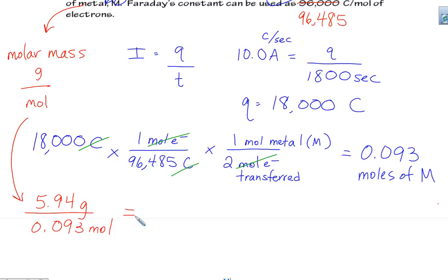So if I plug that in my calculator, I don't know, if I go two sig figs, I guess I'm looking at about 64 grams per mole, something like that. And now we can just go to the periodic table and see who's closest.